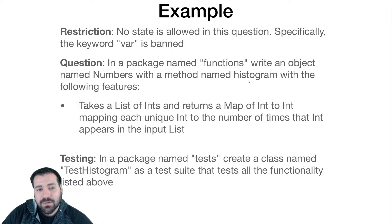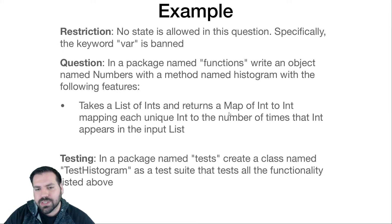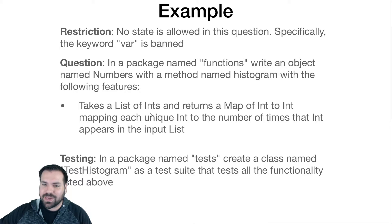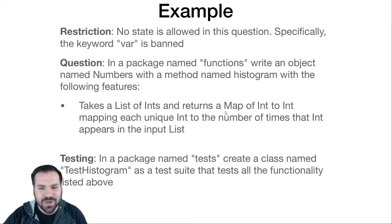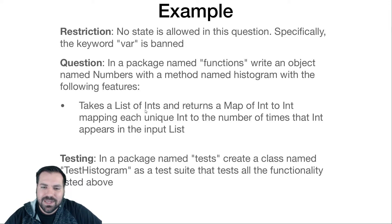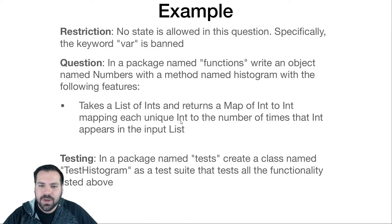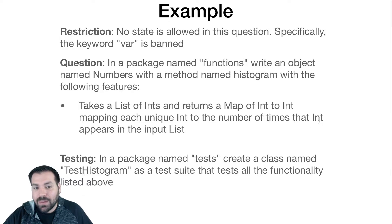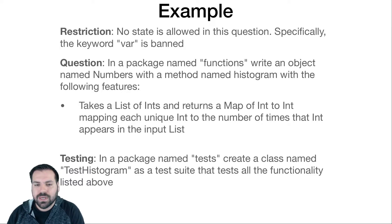We want to write a method named histogram that takes a list of integers and returns a map of integers to integers — a histogram of the inputs. Each unique int from the list gets mapped to how many times it appears in the input list. I'm going to start with the test cases. I'm going to use test-driven development so we're all on the same page of what's being asked.